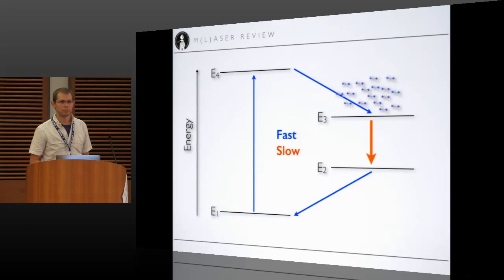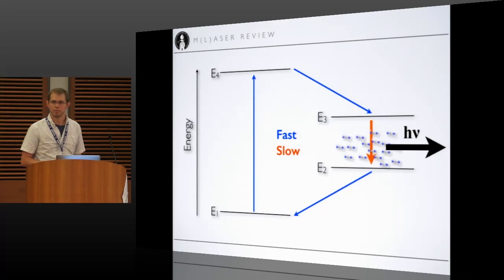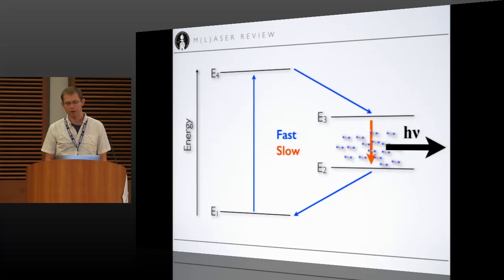and eventually you just build up a large population up here in E3 that's waiting to undergo this very slow transition. Now when one of them goes, it stimulates all of them to go at the same time. And so you get a coherent emission of radiation much more intense than you would expect otherwise from just one molecule going at a time. That's the way the laser pointer works, and that's the way that the transitions that we're going to look at now might work.